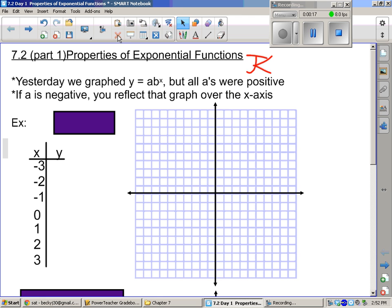Let's talk about properties of exponential functions. Yesterday we graphed y equals ab^x, but all the a's were positive. If a is negative, it's basically reflecting that graph over the x-axis. So a is 1/2, and the 2 is your b.